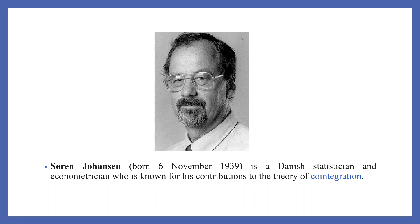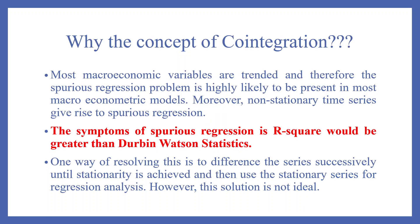The concept of co-integration was given by Soren Johansen, a Danish statistician. Now, why is the concept of co-integration necessary? Most macroeconomic variables are trended, and therefore the spurious regression problem is highly likely to be present in most macroeconometric models. Moreover, non-stationary time series gives rise to spurious regression.